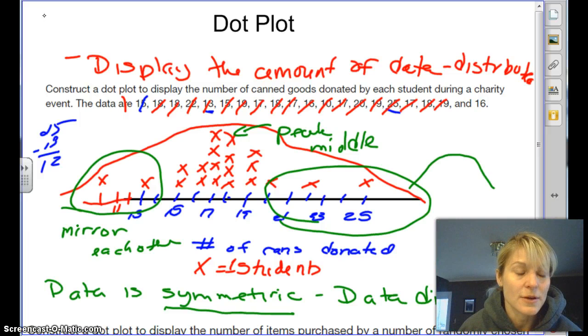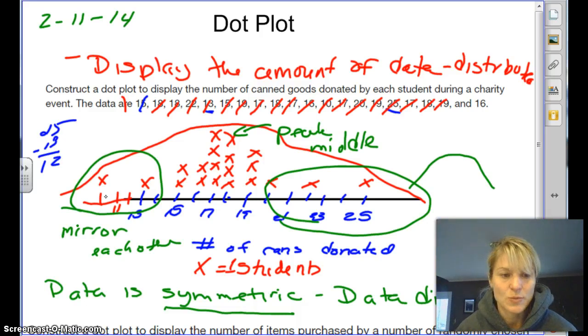One thing I did forget to do though is today is the 11th, I think. I forgot to put the date up there. So a dot plot's pretty easy. We just do the number line, look at your data, each piece gets an x. And then you have to say what kind of symmetry it is.